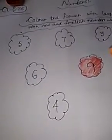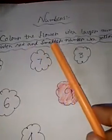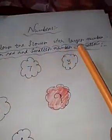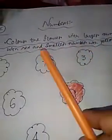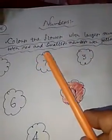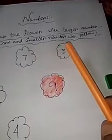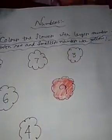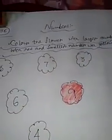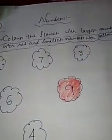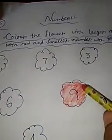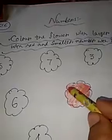You can see there are some numbers. What you have to do here? You have to color the flower with the larger number with red and the smaller number with yellow. I have already done the larger number with red.